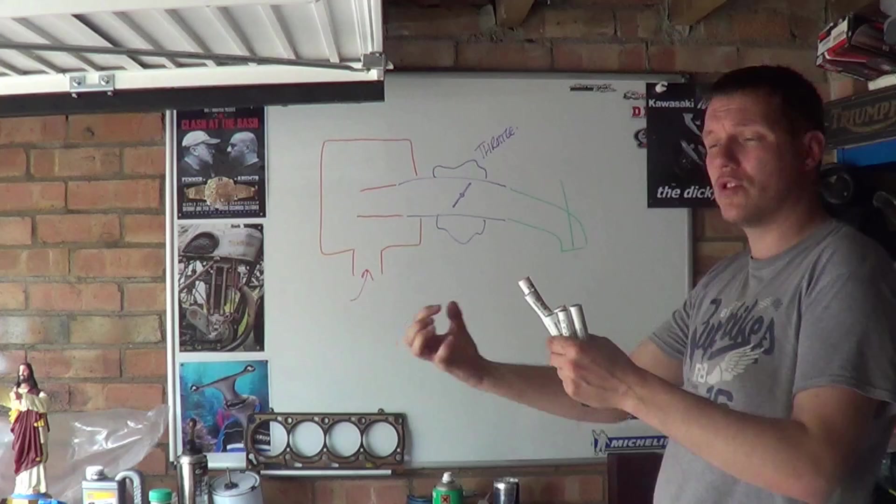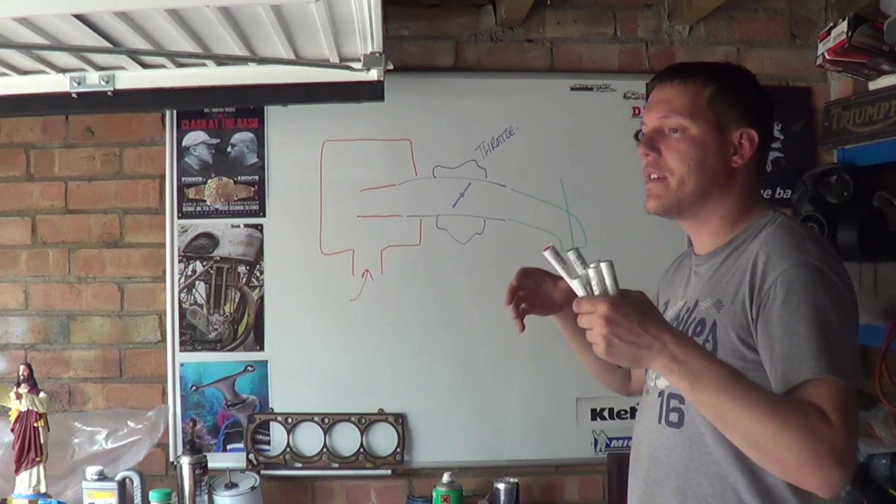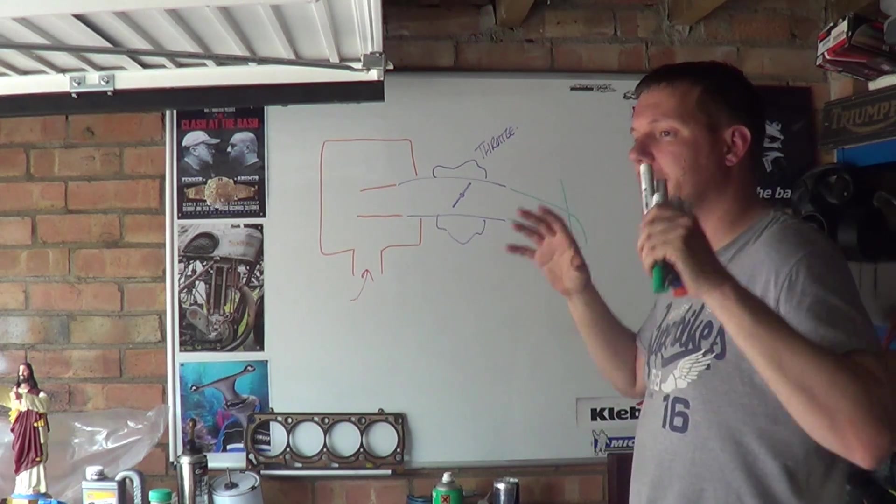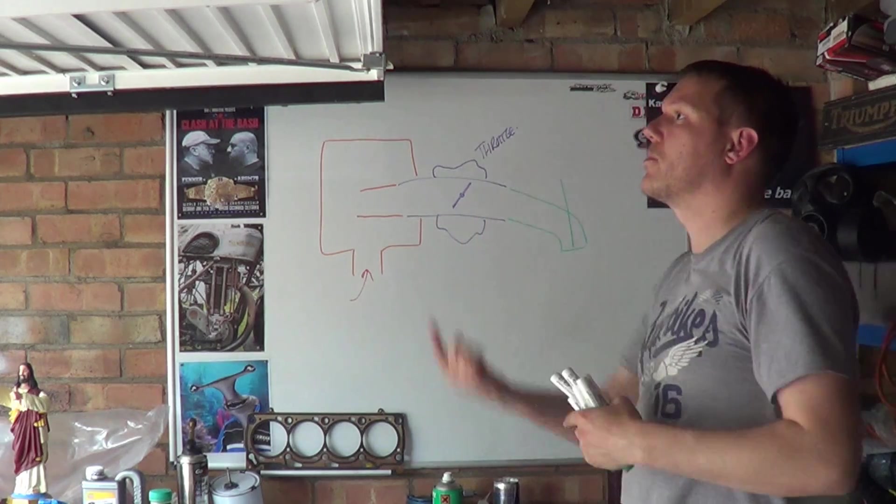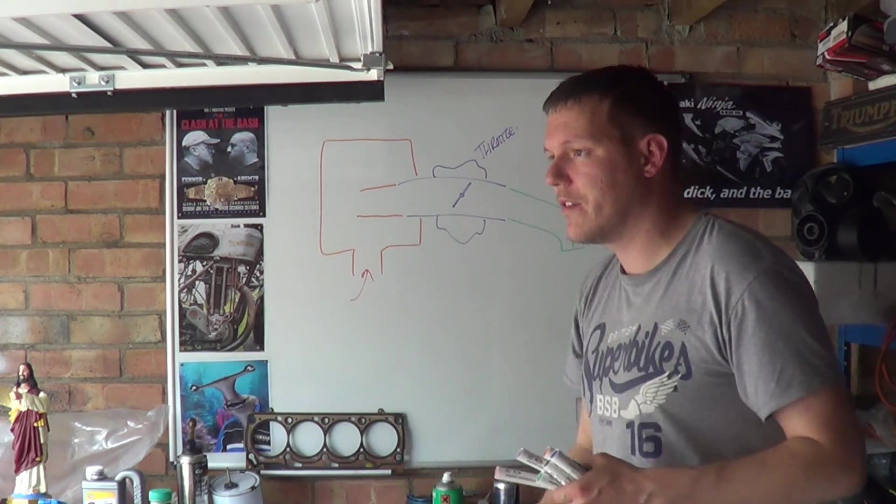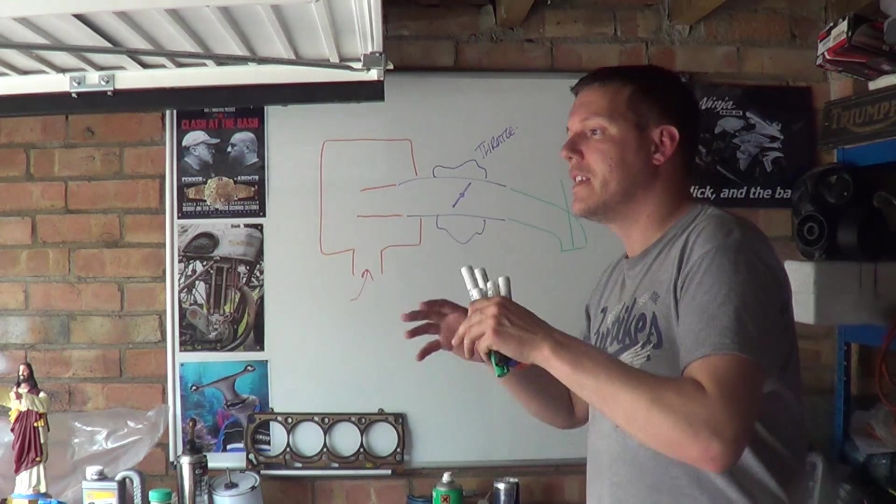The reason why you have an airbox is for stability. So this tract is about to draw in air on the next induction stroke for a four stroke. The airbox is there to stabilize the air, make sure it's not going this way or that way or the wind's going that way or you're falling out of an airplane.